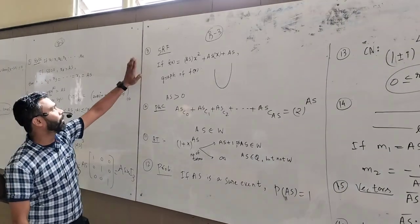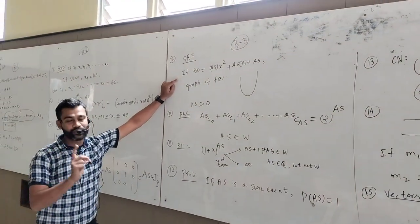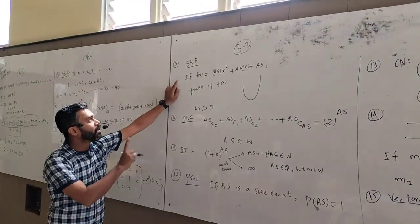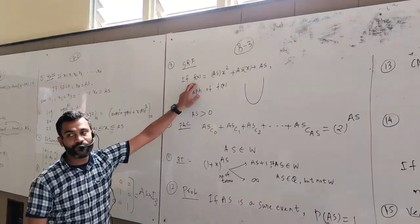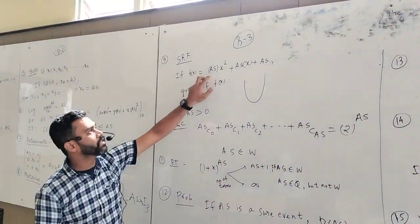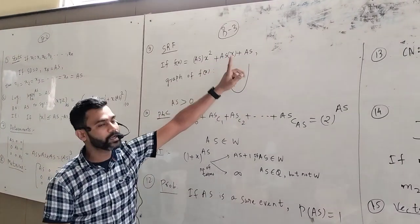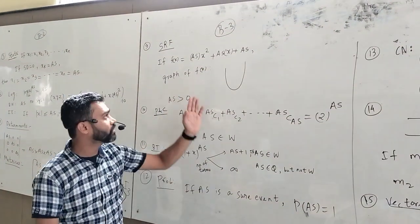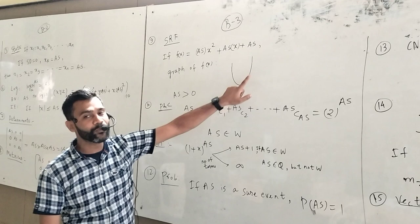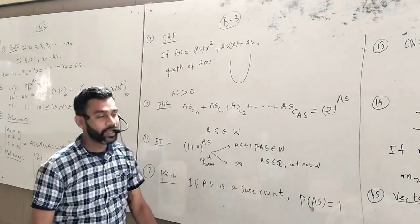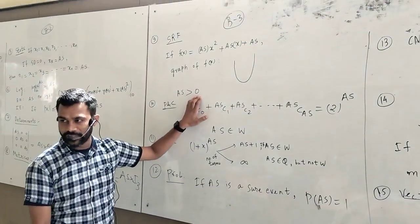Book number 3, chapter number 9: set, relation, and function. If f(x) = Anisar·x² + Anisar·x + Anisar, where Anisar is a constant, the graph of this function will be an upward parabola because Anisar is always positive.